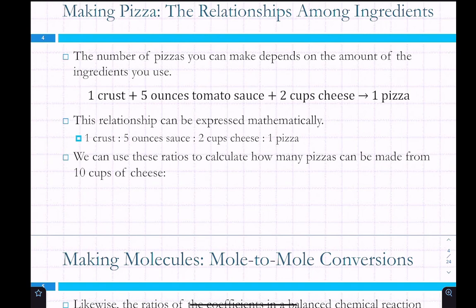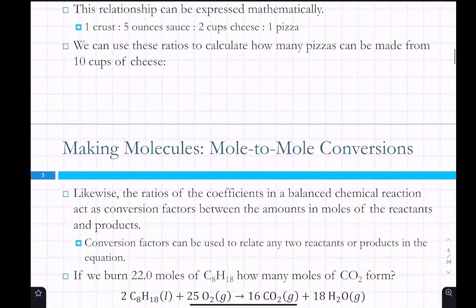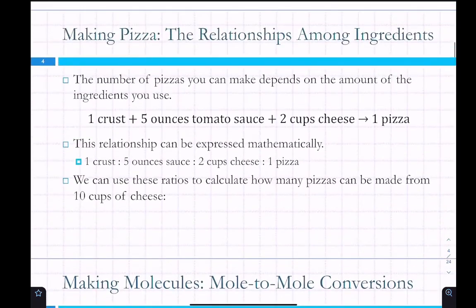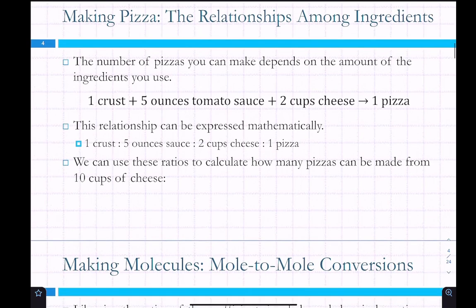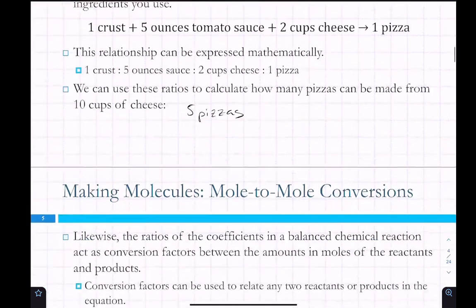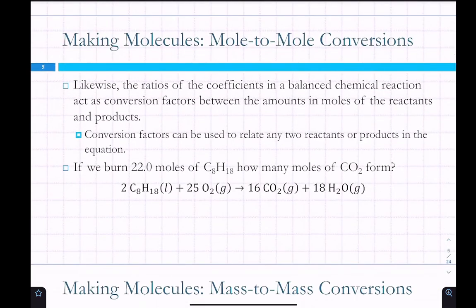We can use those ratios to calculate how many pizzas could be made from ten cups of cheese, assuming we have enough crusts and enough tomato sauce. You could make five. So similarly, the ratios of the coefficients in a balanced chemical equation are ratios, and we can use these conversion factors to relate any reactants or products in the equation.